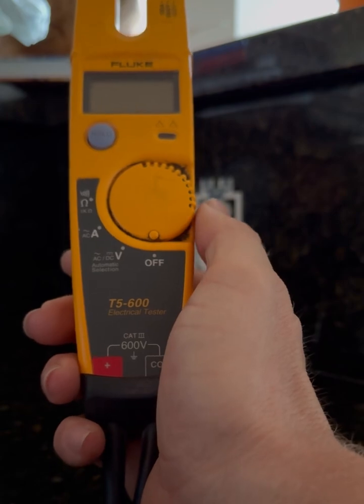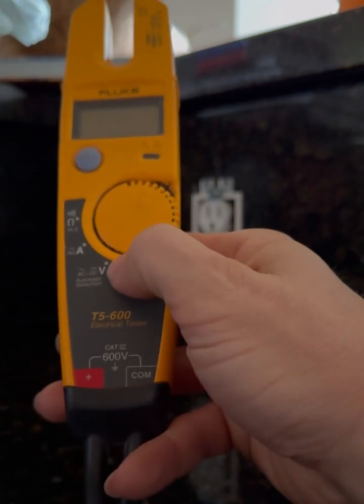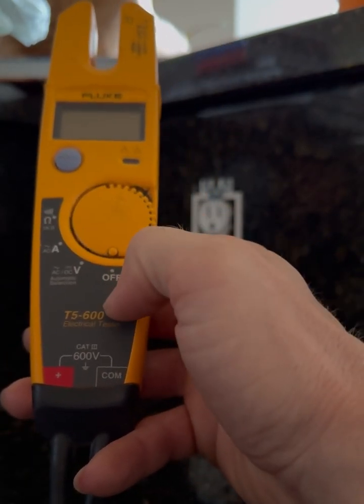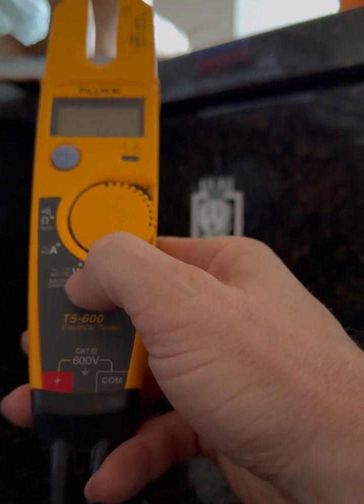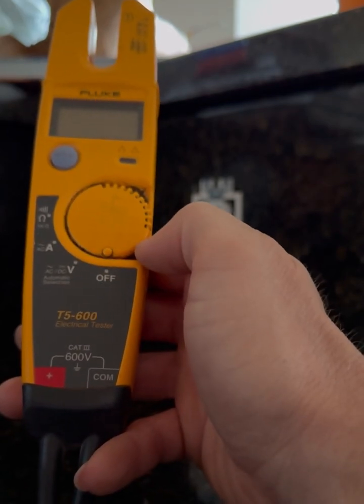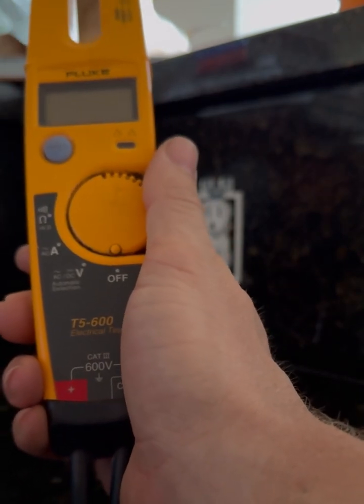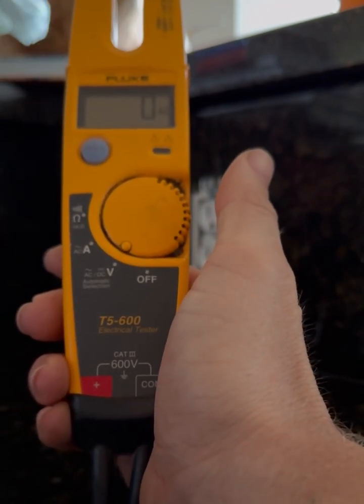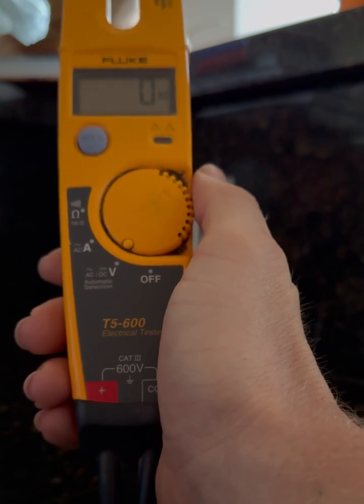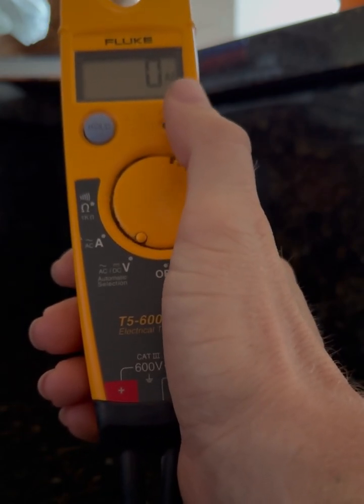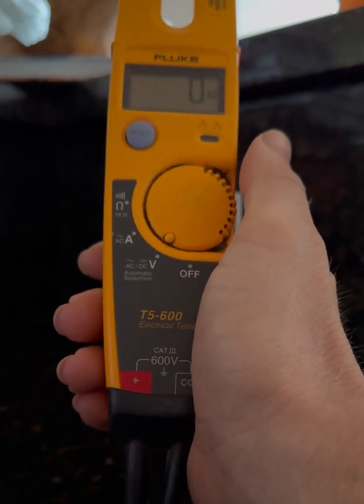So like I said, we're going to be going over the voltage function first, which is indicated right here with the V. As I also said, we can do AC or DC with this meter, but today we're only going to be doing AC. So what you want to do is turn the dial to V. You'll hear the beep. The screen will come on and indicating zero volts, obviously, because we're not testing anything currently.